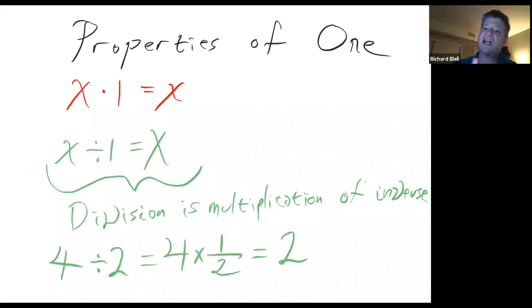You can also divide by 1, and it doesn't make a difference. 4 divided by 1 equals 4. It's important to remember in this particular case that when you divide by a number, it's the same as multiplying by the inverse of the number. So 4 divided by 2 is the same as multiplying 4 by 1 over 2.